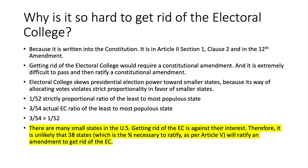Because there are many small states, abolishing the electoral college is against their interest — it gives them a little more power in choosing the president. Therefore, it is highly unlikely that 38 states, the three-fourths required to ratify a constitutional amendment under Article 5, will ever ratify an amendment to eliminate the electoral college.